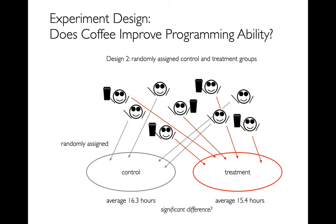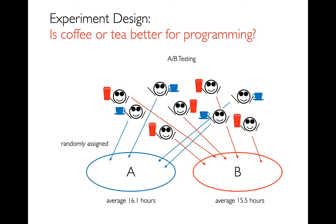Statistics can answer how much of a difference is likely noise versus a meaningful signal. You could also give decaf coffee to the control group to avoid a placebo effect, where having a cup of coffee might artificially boost confidence. This control-and-treatment setup is a more specific version of A-B testing. More generally, A-B testing just means comparing two different things — like whether coffee is better or tea is better.